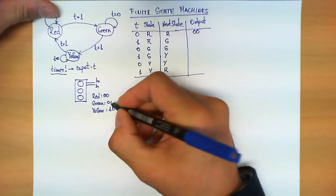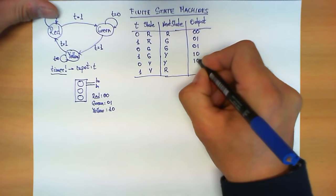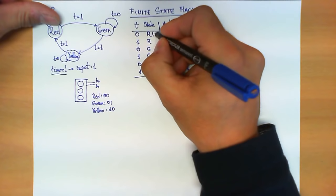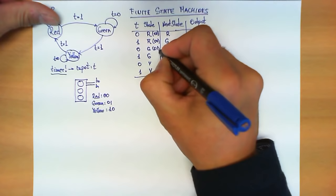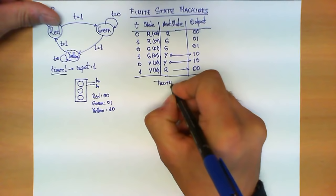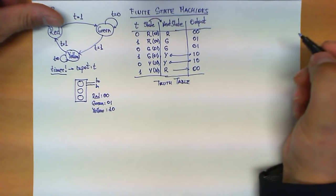In this case, red is encoded as 00, green as 01, and yellow as 10. If we apply the same encoding for the current state column — putting 00, 00, 01, 01, 10, 10 — what we have here is basically a truth table. It's a truth table that at the same time is telling us how to make a transition from one state to the next. And this is the definition of a finite state machine.